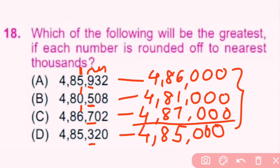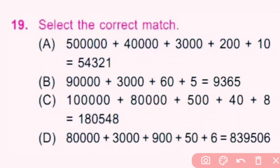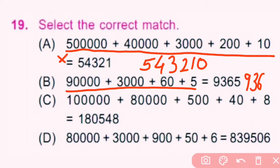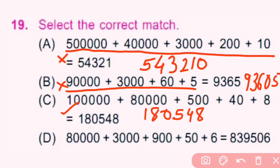4,87,000 is the greatest number, so C is the correct answer. Question number 19. Select the correct match. Option A gives 5,43,210 — this is incorrect. Option B gives 93,605 — this is also incorrect. Option C gives 1,80,548 — this is the correct match. Option D gives 83,956 — this is also incorrect. Only option C is the correct match, so C is the correct answer.